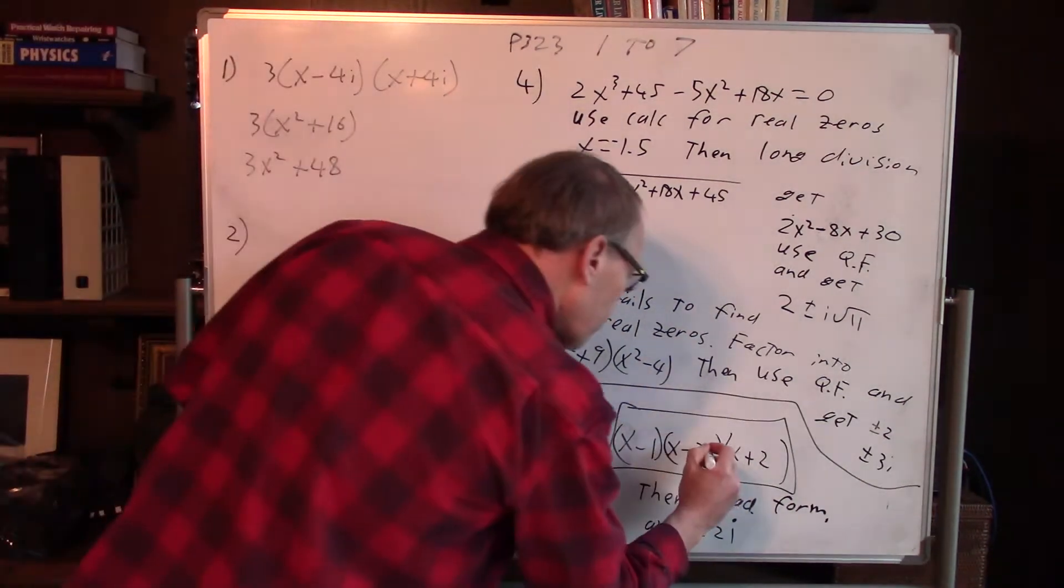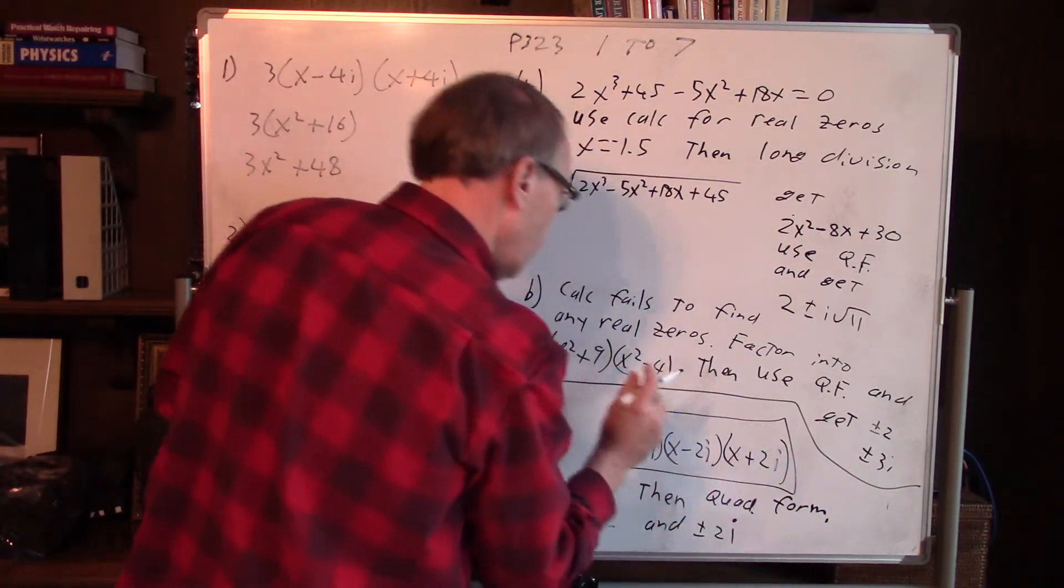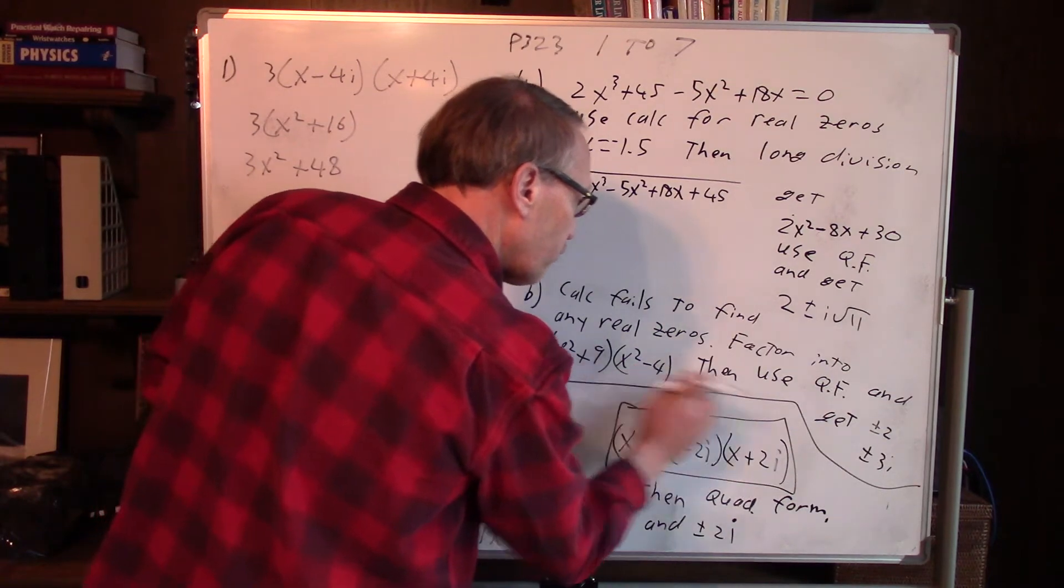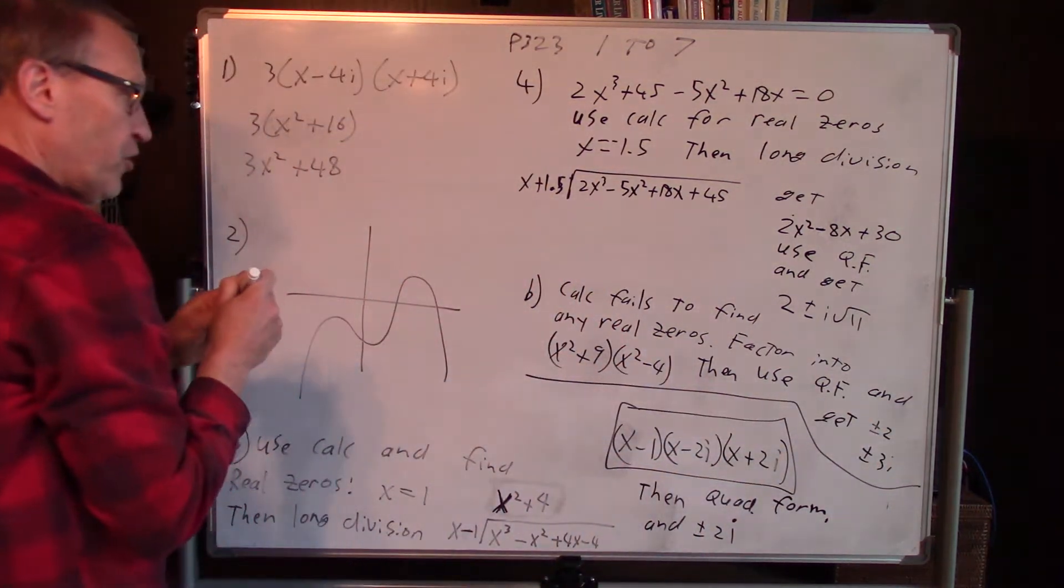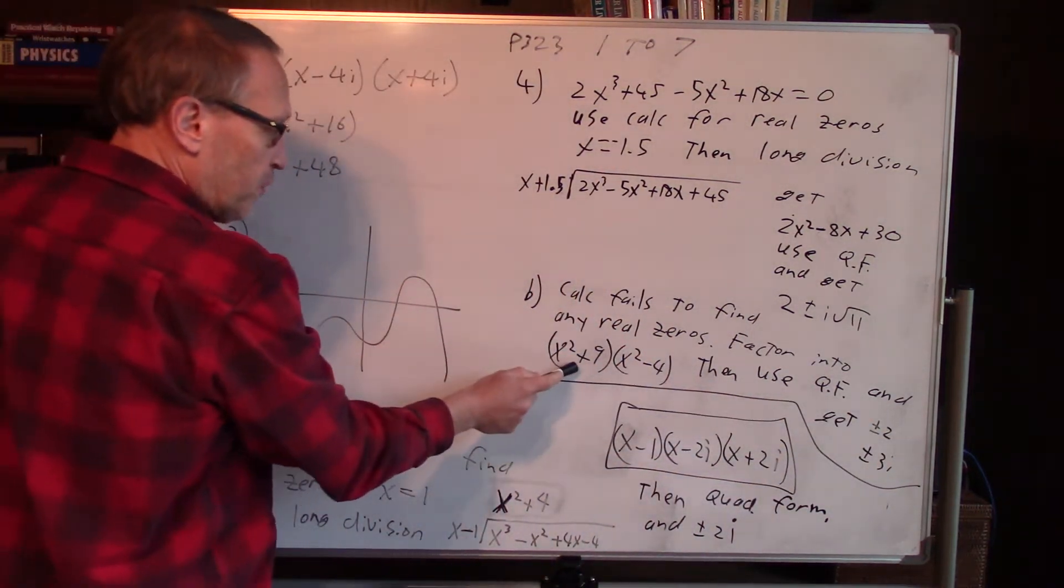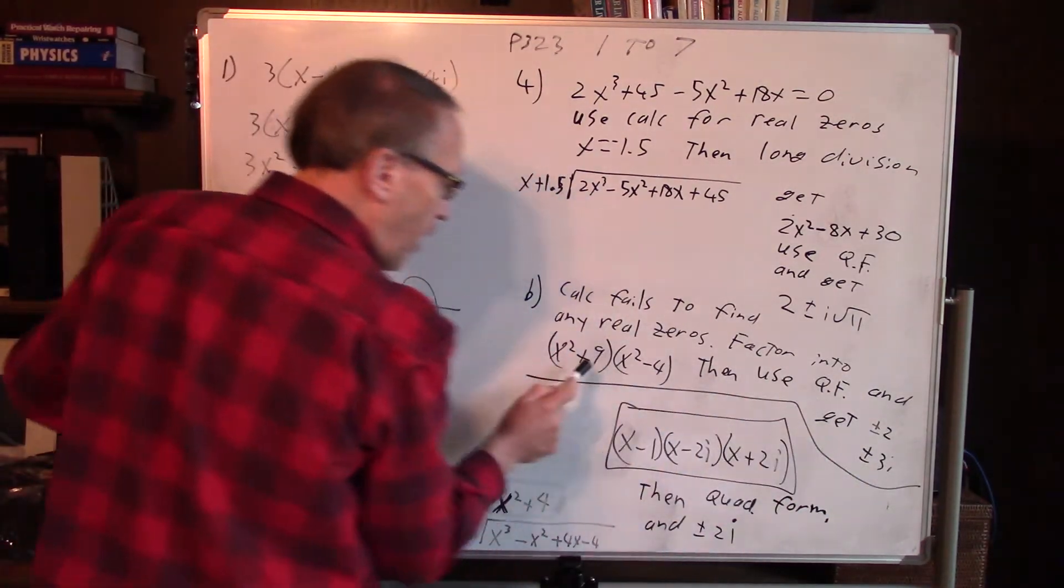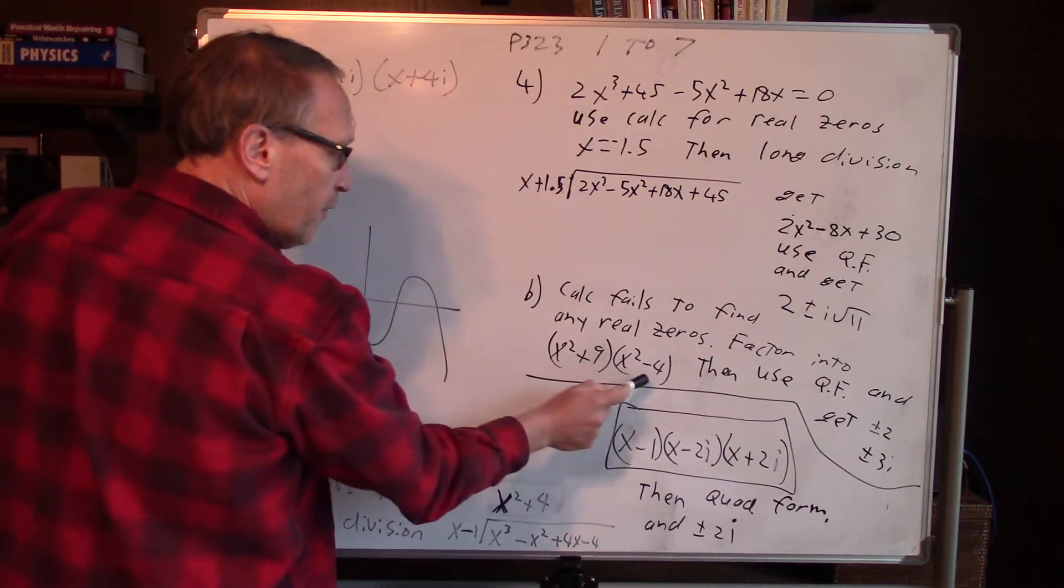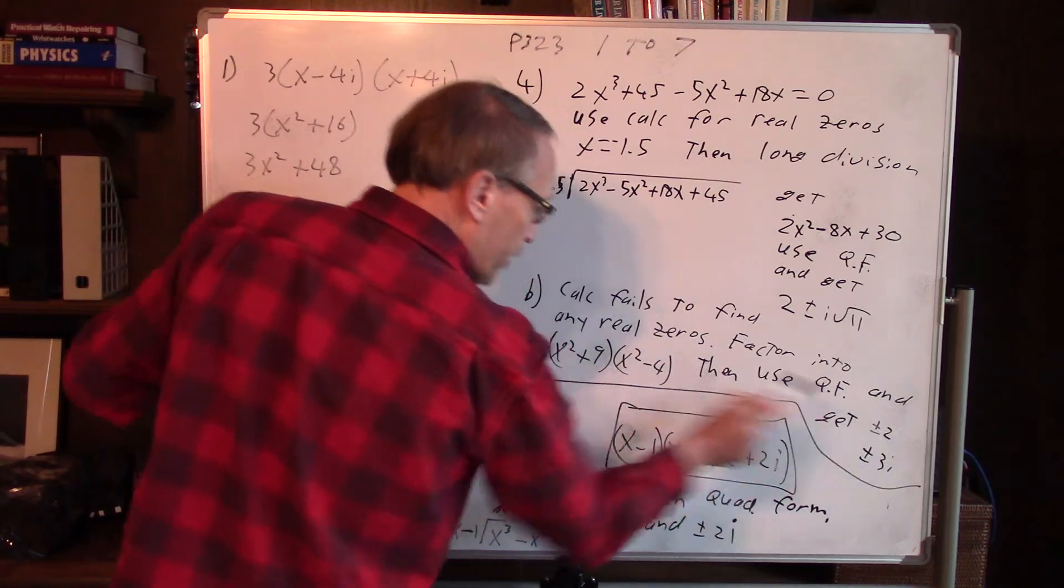And you'll get this one's answer is plus or minus 3i. This one gives plus or minus 2, actually real answers. So actually the calculator should have found these. Maybe when I plugged in, I don't know what happened, didn't find it.